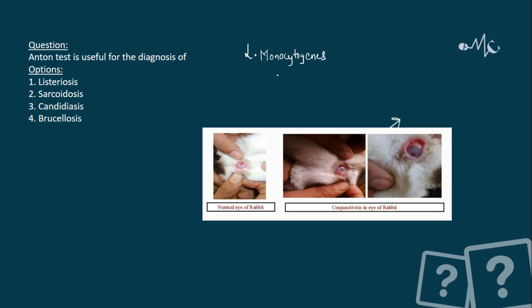Please remember Anton test and don't get confused with Adson's test — Adson's test is done in thoracic outlet syndrome. These days they try to confuse us with the options; if the first option is thoracic outlet syndrome you will be forced to mark it. The inoculation of the culture of Listeria injected into the conjunctival sac of a rabbit or guinea pig causes severe keratoconjunctivitis within 24 hours.